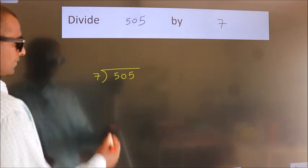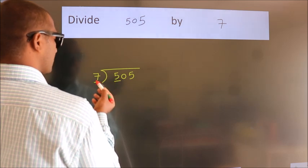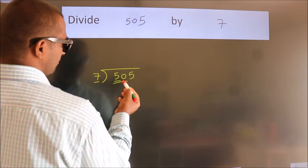Next, here we have 5, here 7. 5 is smaller than 7. So we should take two numbers: 50.